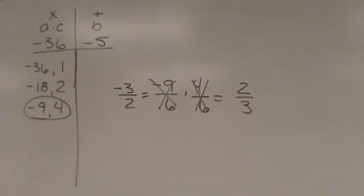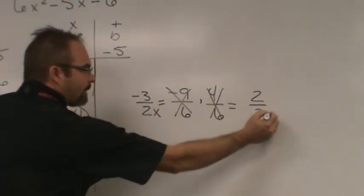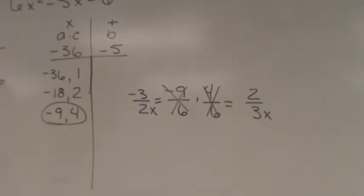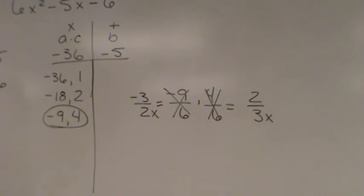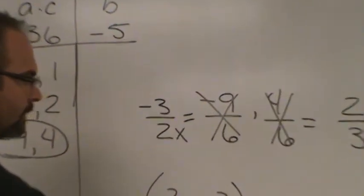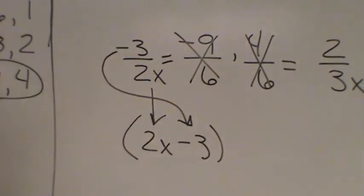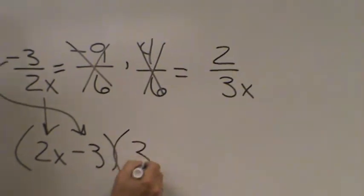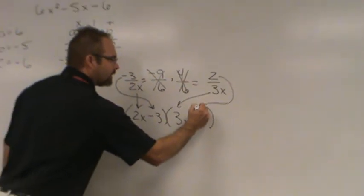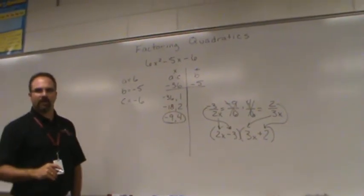This last step is really just to keep things in order. I throw a variable in the denominator because now the information is right in front of you to write down the factors: 2x minus 3, which comes from here and here, and 3x plus 2, which comes from here and here. Just another way to solve a quadratic equation.